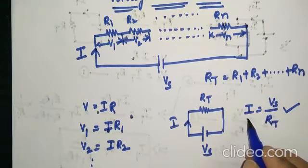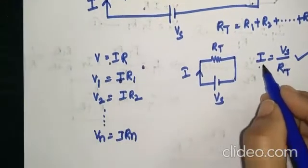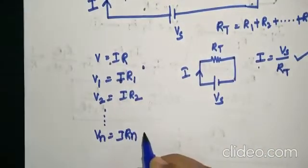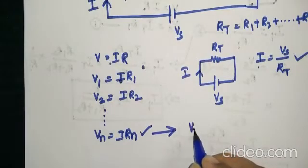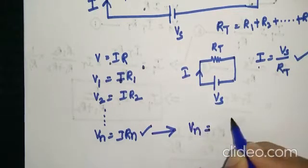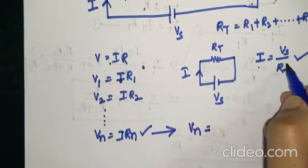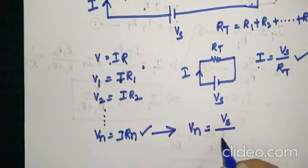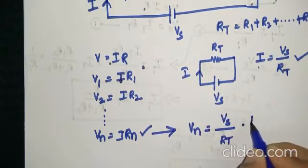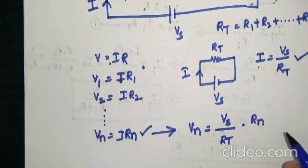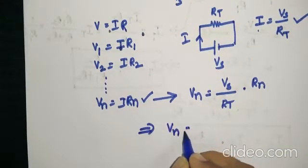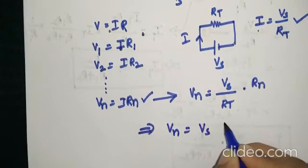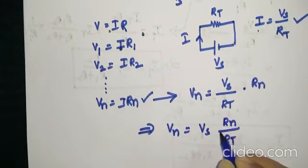Now substitute this current I relation in any of the equations. Let us use the general term. Vn is equal to I. Instead of I, we can write Vs by Rt. So this is Vs by Rt into Rn. This is voltage division rule. Let me explain by rearranging this equation.